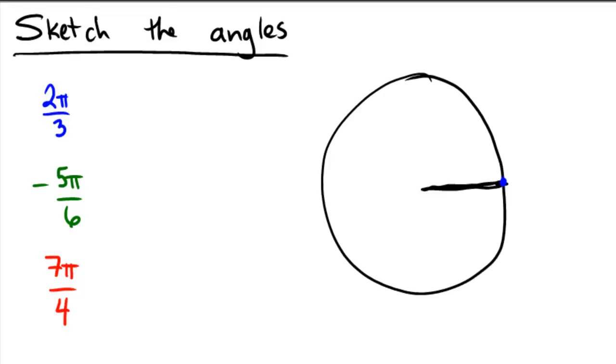In other words, 2π over 3 would be, since the whole is 2π for a circle, this would be 1 third of the way around the circle. So this is going to go here, and it's going to extend past the π over 2, and it's going to go over here to about 2π over 3. So this would be the angle that would be represented by 2π over 3, and this would be sketching the angle for 2π over 3.